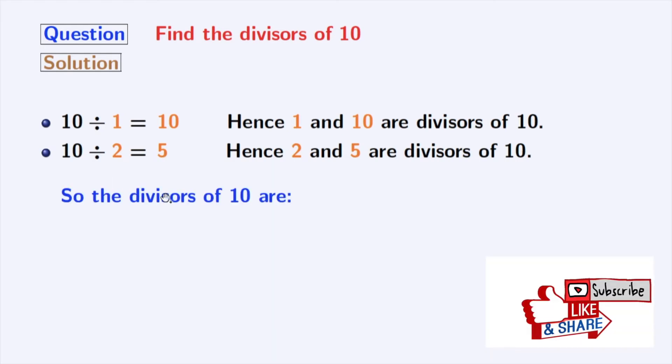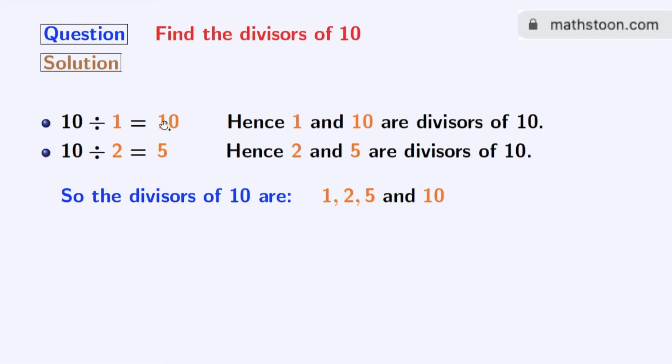Now we have all the divisors of 10 which are orange in color: 1, 2, 5 and 10. So, the total number of divisors of 10 is 4.